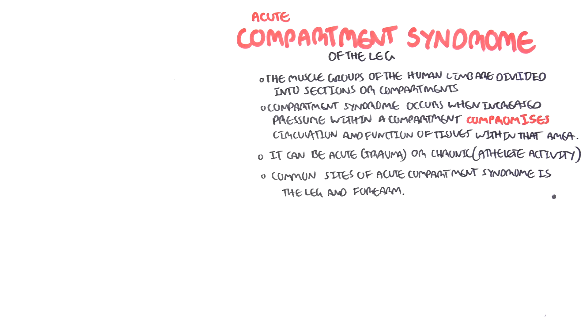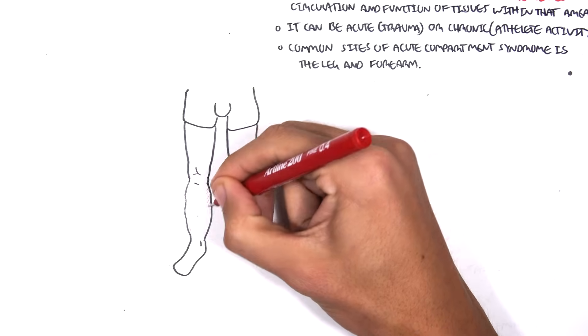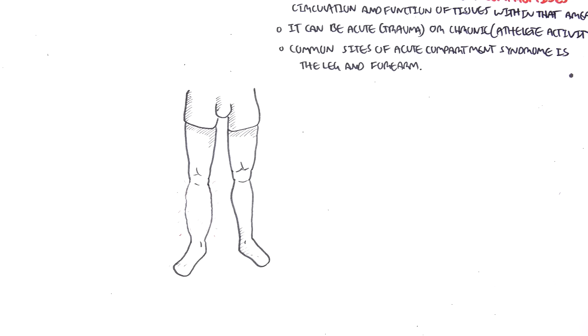Here I'm drawing the leg of a person, and on the right we can see an enlarged leg, which is meant to represent Compartment Syndrome. Before going into Acute Compartment Syndrome, let us talk about the compartments of the leg as an example.